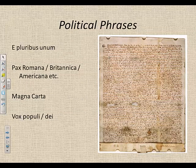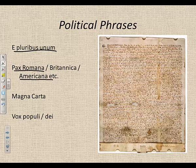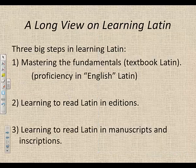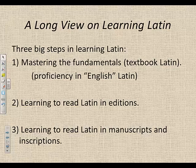There are a lot of political phrases you might know in Latin that we use today. For instance, our national motto, E Pluribus Unum — out of many, one. Then there are other political phrases like Pax Romana, or the Pax Britannica, or the Pax Americana — that is, the Roman peace, the British peace, or the American peace. Magna Carta is a big one — that's what King John signed. And then there are phrases like Vox Populi or Vox Dei. Beyond these, we also have a lot of words in our general vocabulary that are derived from Latin or very similar to Latin.